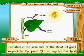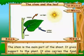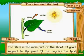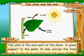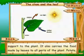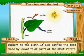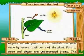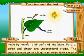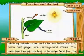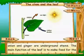The stem and the leaf. The stem is the main part of the shoot. It gives support to the plant and carries the food made by leaves to all parts of the plant. Potato, onion and ginger are underground stems.